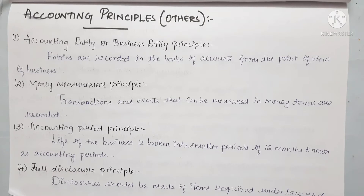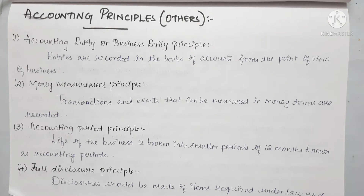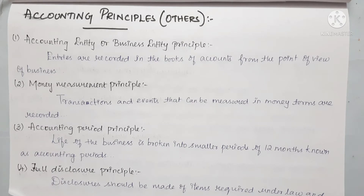The next principle is the accounting period principle. An accounting period is for 12 months. For example, January to December, or April to March. Most businesses follow April to March — that is April 1st to March 31st. So 12 months is divided as one accounting period, and the business activities are recorded within that period.